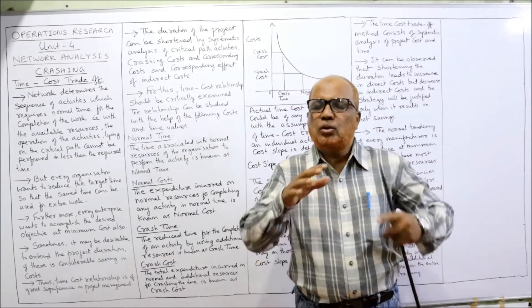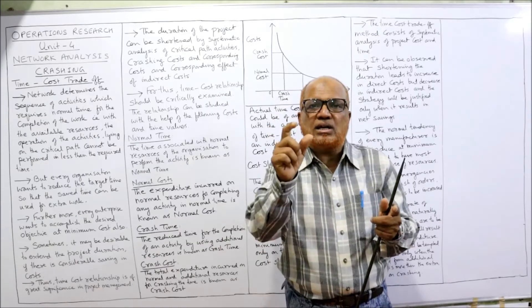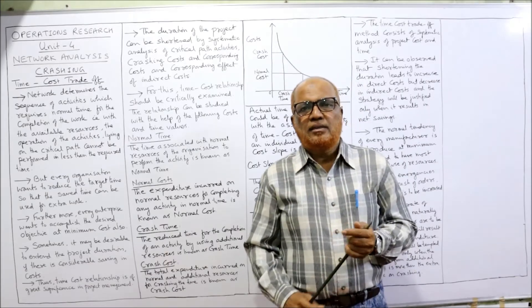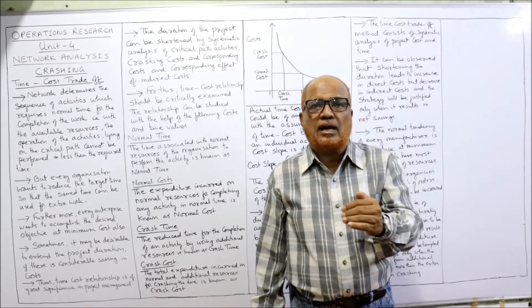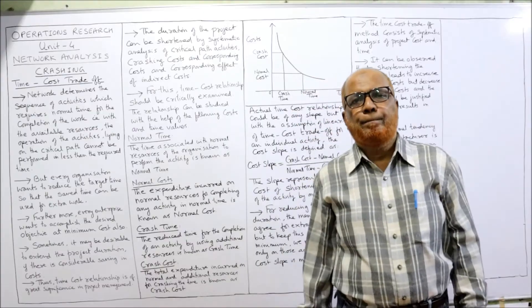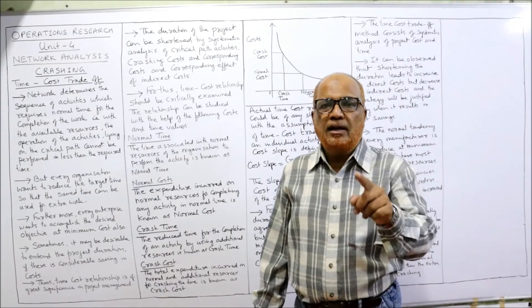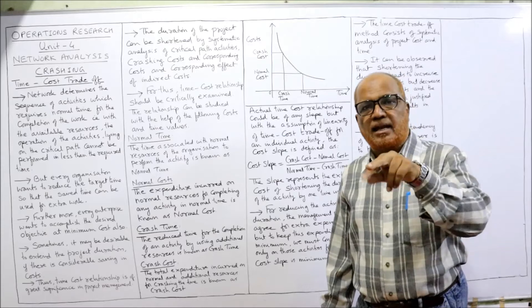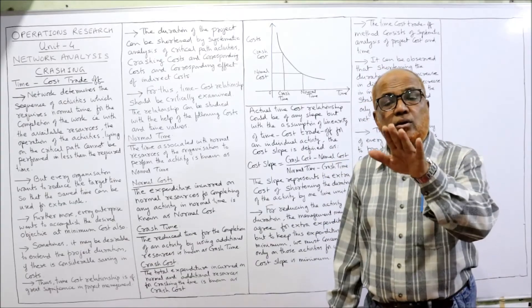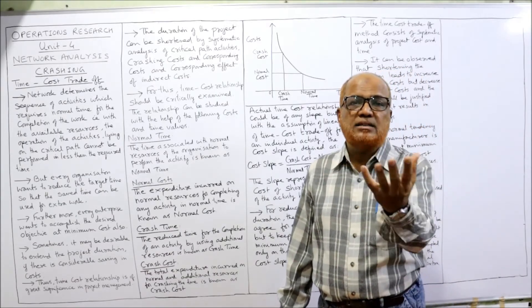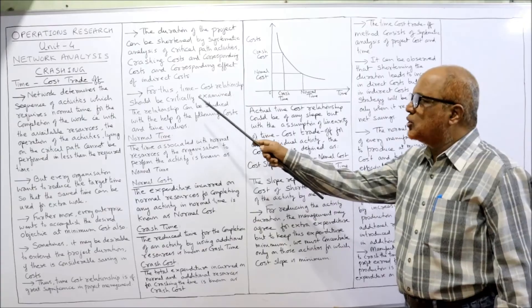To shorten the total project duration, the project manager has to crash the duration of critical activities — that is, reduce the duration of critical activities by applying additional resources. When additional resources are employed, direct cost will increase but indirect cost will reduce. Two types of cost exist in any project: direct and indirect. When additional resources are employed, direct cost increases but indirect cost decreases. The management has to assess the net effect of direct and indirect costs, and the time-cost relationship should be critically examined.